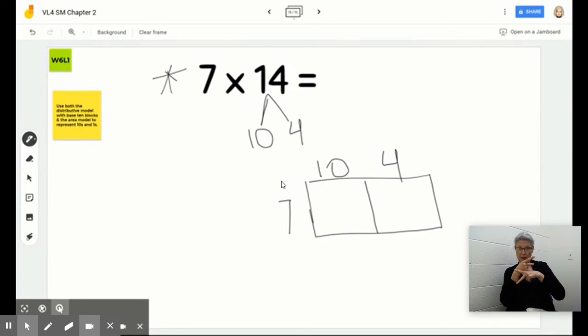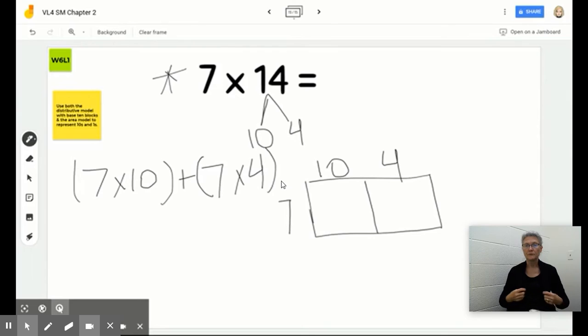Just like from up here, 7 times 10. That will give us our partial product. Then we need to add it to our 7 times 4. So what we've done is we've shown you two different models right here. I can actually just go ahead and start finding out what my partial products are.